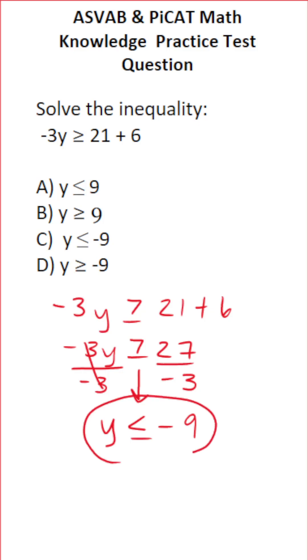So this is y is less than or equal to negative 9, which is answer choice C. Remember, if you multiply or divide across the inequality sign by a negative value, that prompts you to change the direction of the sign.